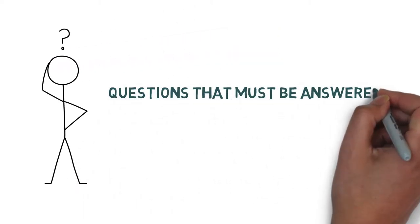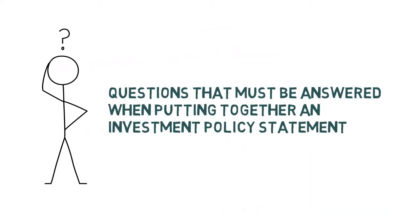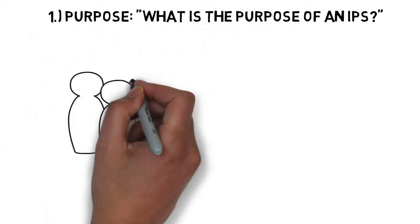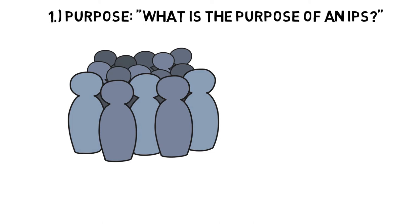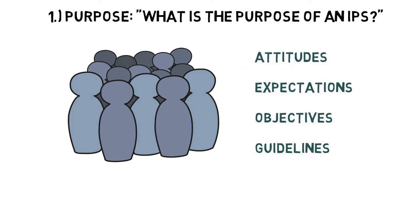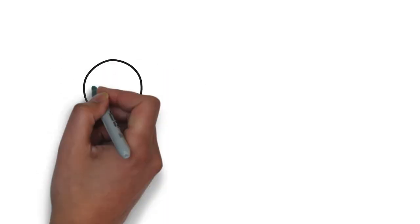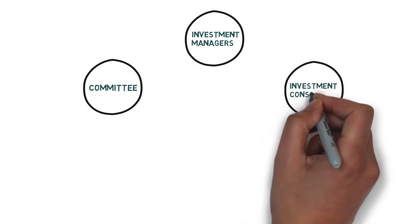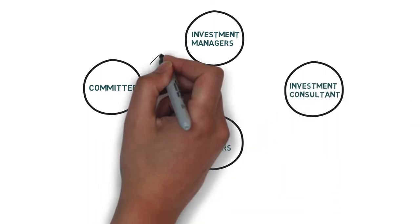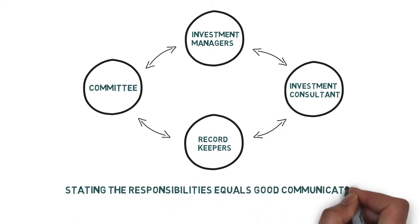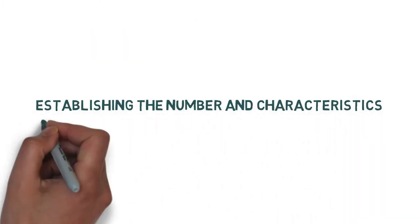What is the purpose of an investment policy statement? It states in a written document the committee's attitudes, expectations, objectives, and guidelines in the investment of all plan assets. It also states the responsibilities of the committee, the investment managers, the investment consultant, and the record keepers, which will encourage effective communication.